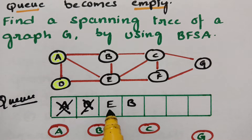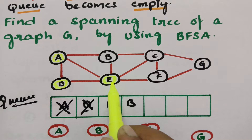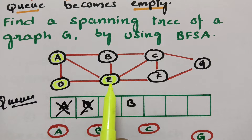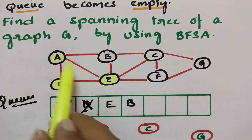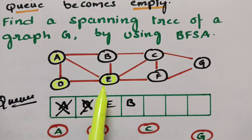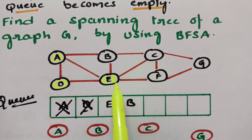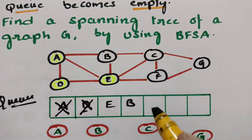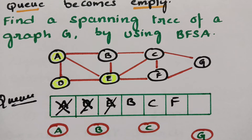The next vertex is E. Now I have to visit E. After visiting E, I have to explore — searching how many adjacent vertices there are: D, A, B, C, and F — that is 5 adjacent vertices. A is already posted, D is already posted, B is already posted. What remains? C and F. So now I have to post C and F. After exploring, I delete E from the queue. First we visit and explore, then delete.